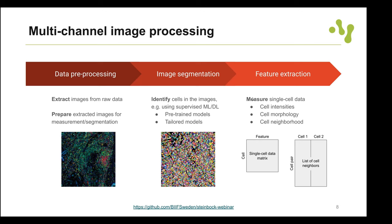This setup is usually the most complicated step — everything from here is just executing individual commands. Now with the Steinbock command defined, we can pre-process our IMC images. Here we apply hot pixel filtering, which removes individual hot pixels generated as technical artifacts by the Hyperion machine used to acquire these images.